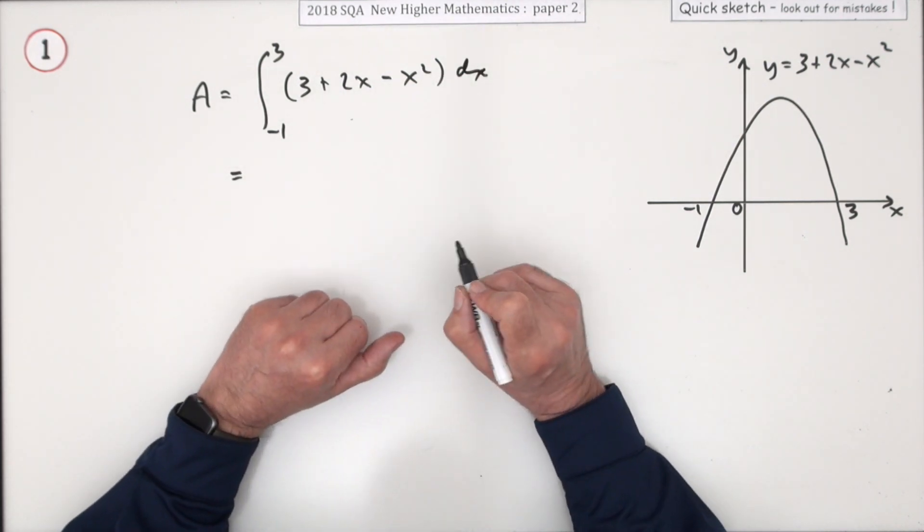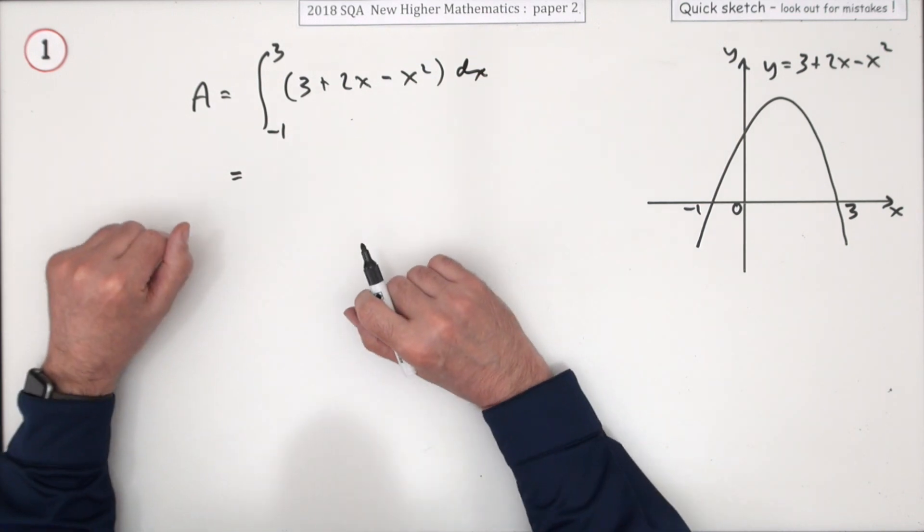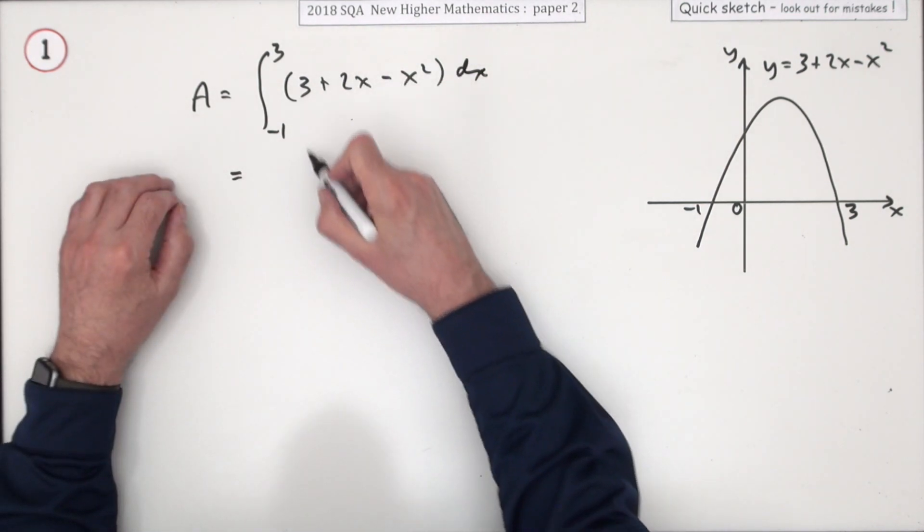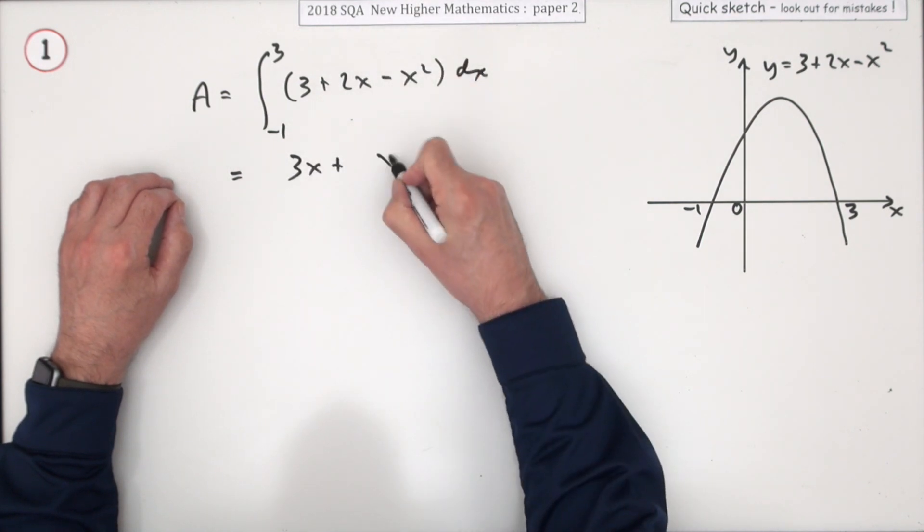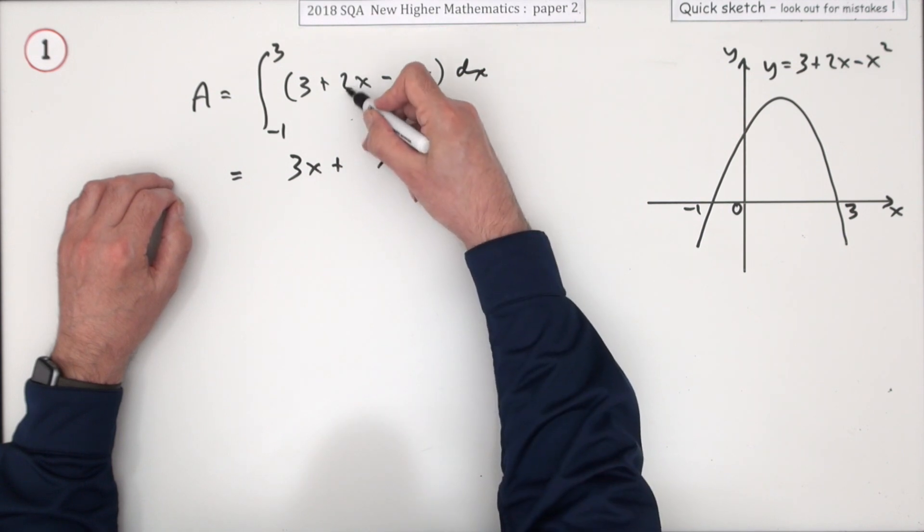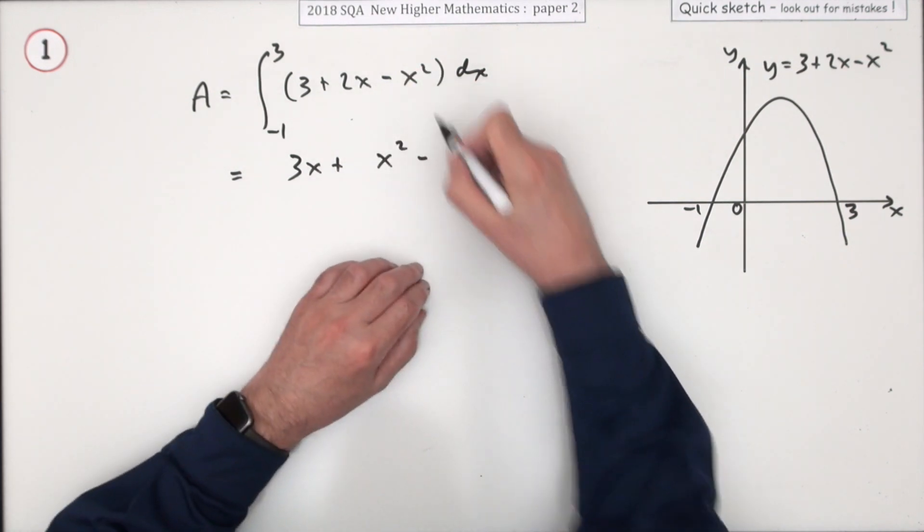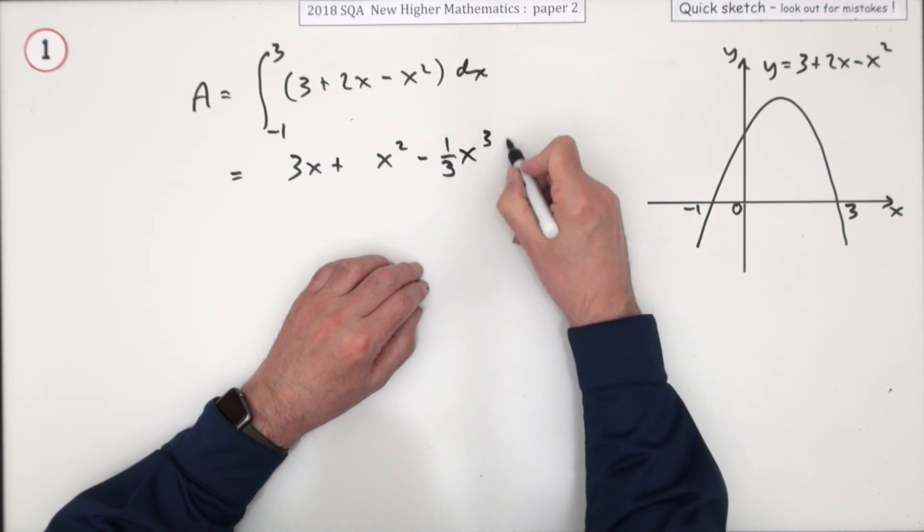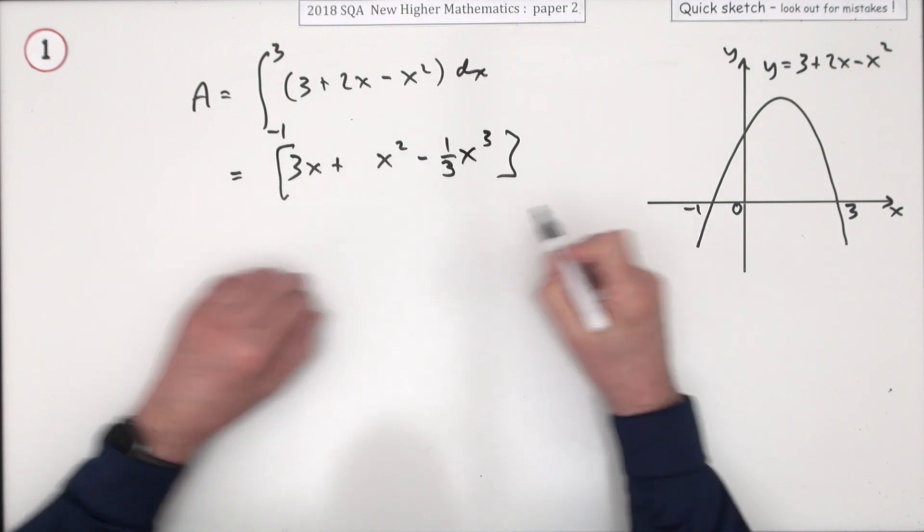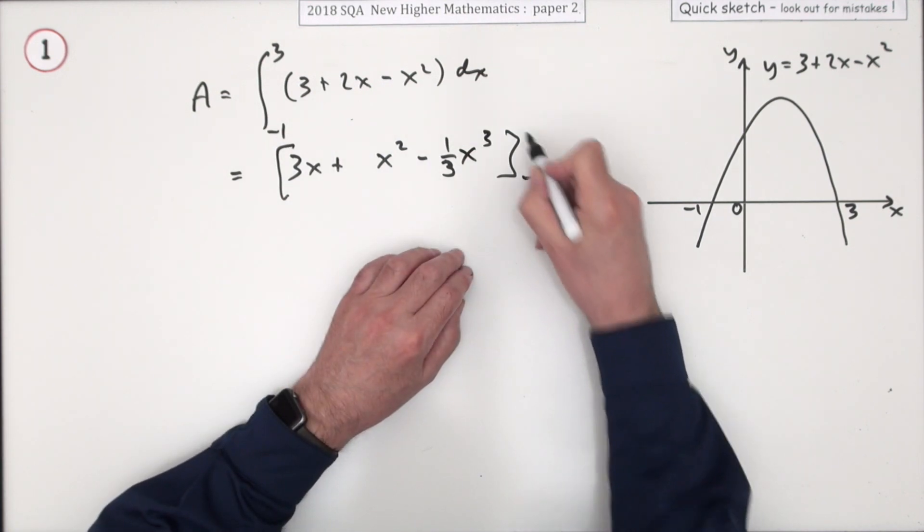Now integrate. So 3 goes back up to 3x. x goes up to x squared, add 1 to the power, divide by that, but I'll just incorporate that 2 divided by that, just makes it 1. x squared goes up to x cubed, add 1 to the power, but I'll need to divide by that power because there's nothing for it to divide into exactly. Evaluated from negative 1 to 3. That'll be the second mark.